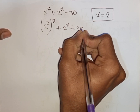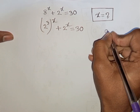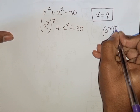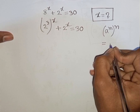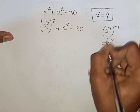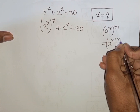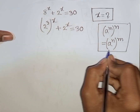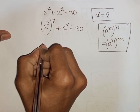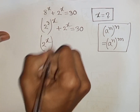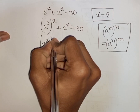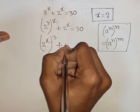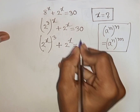Now, here you can apply the exponential rule that a power m, bracket power n, is equal to a power n bracket power m. So according to this rule, you can write here 2 power x, bracket power 3, plus 2 power x is equal to 30.